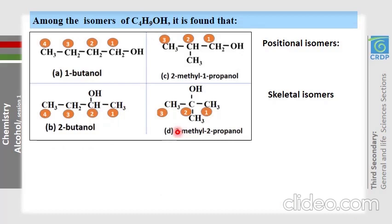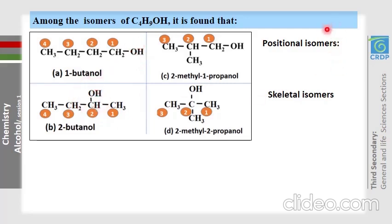Among these isomers, let's identify positional isomers and skeletal isomers. Positional isomers are molecules with exactly the same carbon chain but different positions of the functional group. Molecules A and B have the same carbon chain but the OH group is in different positions, so A and B are positional isomers.